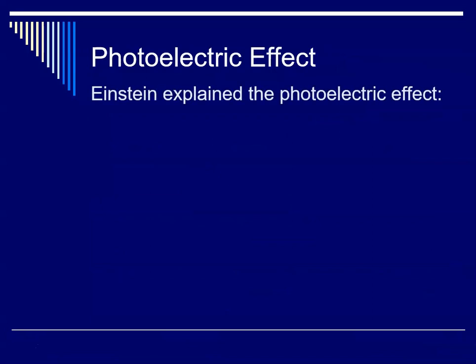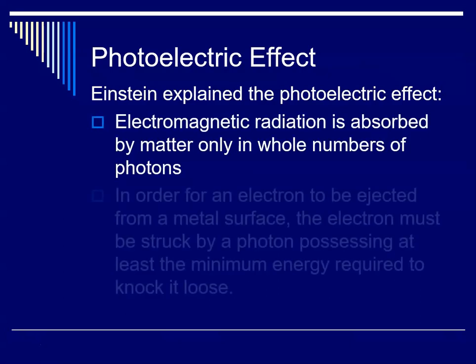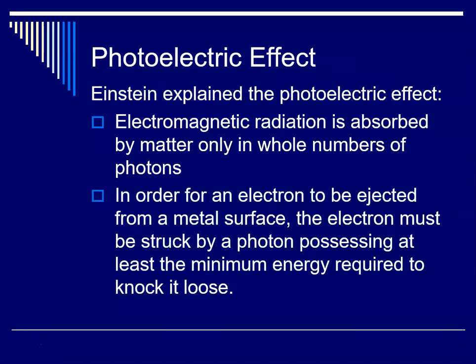So Einstein explained the photoelectric effect in this way: electromagnetic radiation is absorbed by matter only in whole numbers of photons. So in order for an electron to be ejected from the metal surface, the electron must be struck by a photon that had that minimum energy required to knock it loose. So the energy of a photon is equal to h nu, where h is still Planck's constant, and nu is still the frequency.